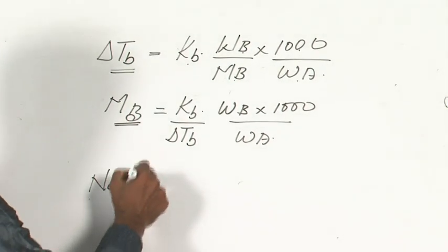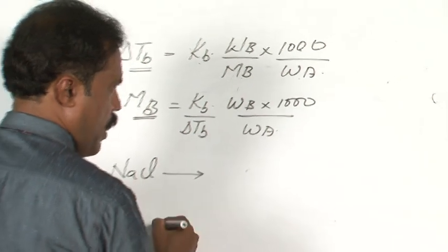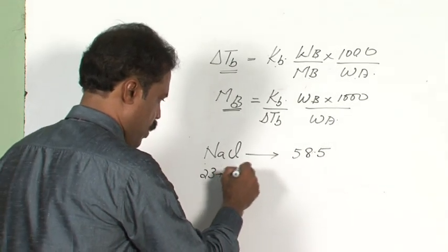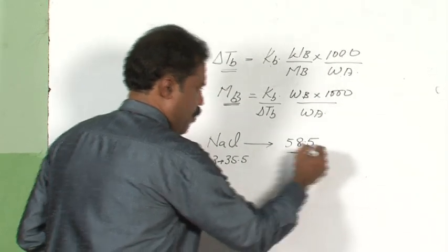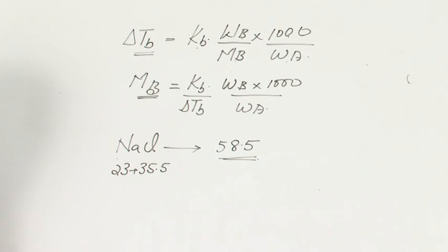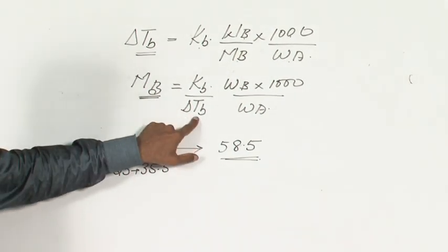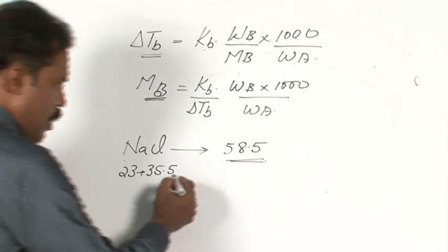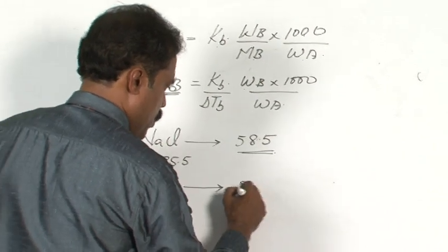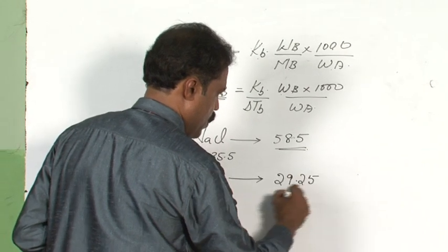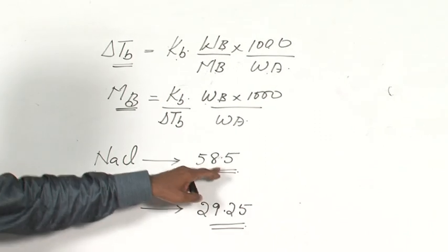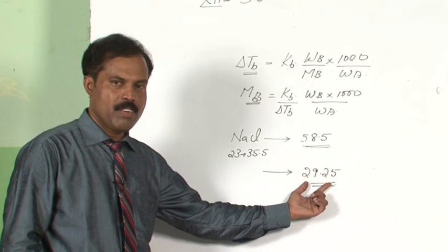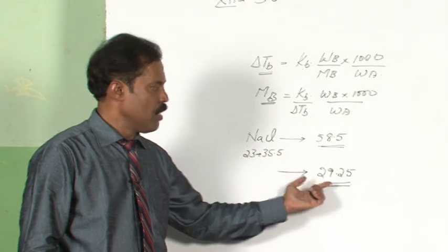Let us consider sodium chloride. As you already know, the actual molecular weight of sodium chloride is 58.5, which is 23 plus 35.5. When we try to find out the molecular weight of sodium chloride using this colligative property — elevation in boiling point — it is observed that the molecular weight obtained from this calculation is 29.25, which is not the actual molecular weight.